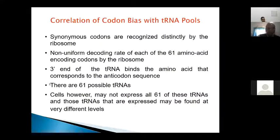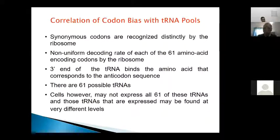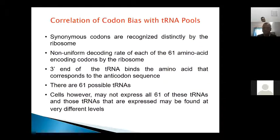There are 64 possible tRNAs, but in all species not all 64 tRNAs are present — there are always fewer tRNAs present. Synthesis of tRNA also requires energy, so nature conserves energy by maintaining only the tRNAs required. If the same gene is expressed in a different organism where tRNA availability is low, the expression may be affected.